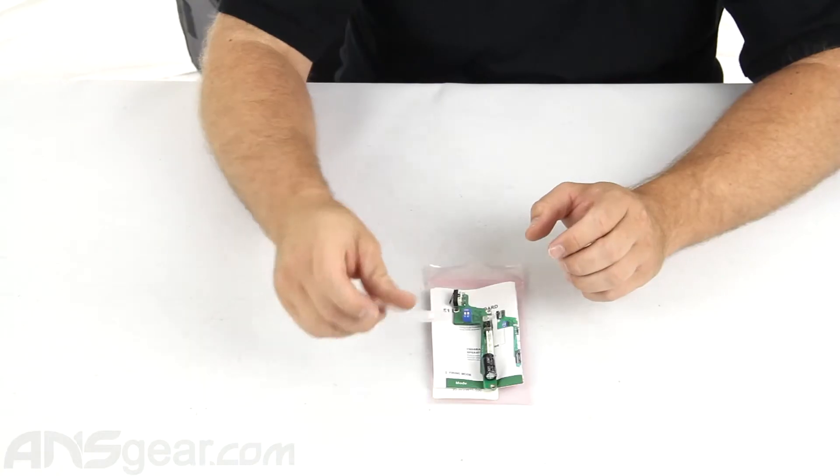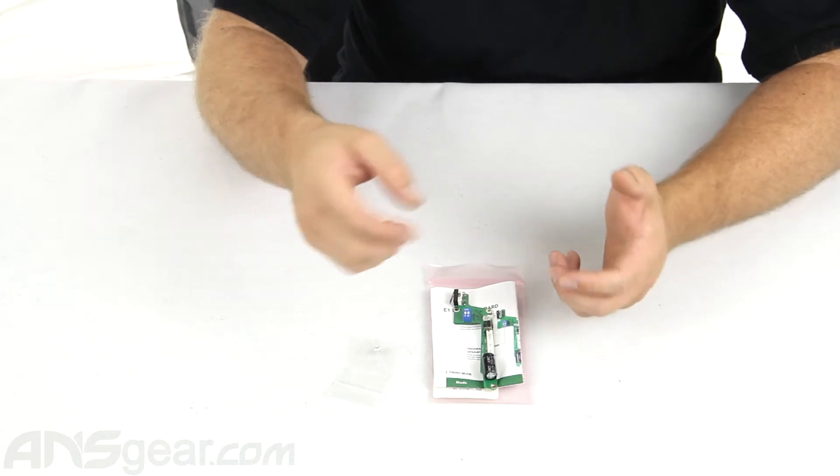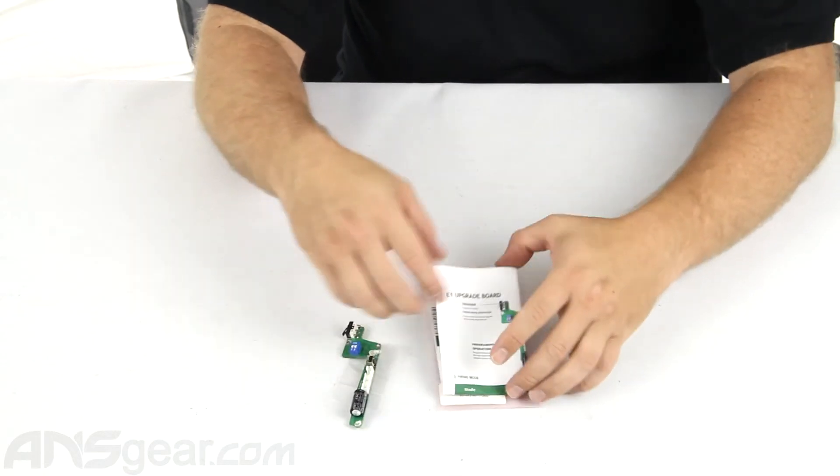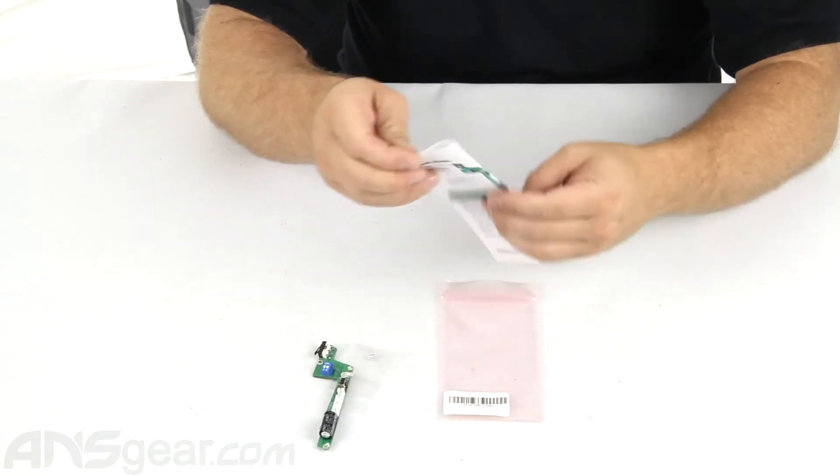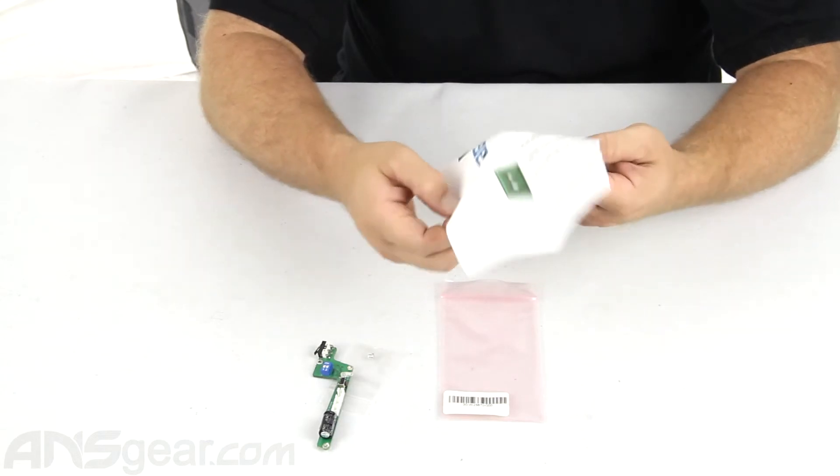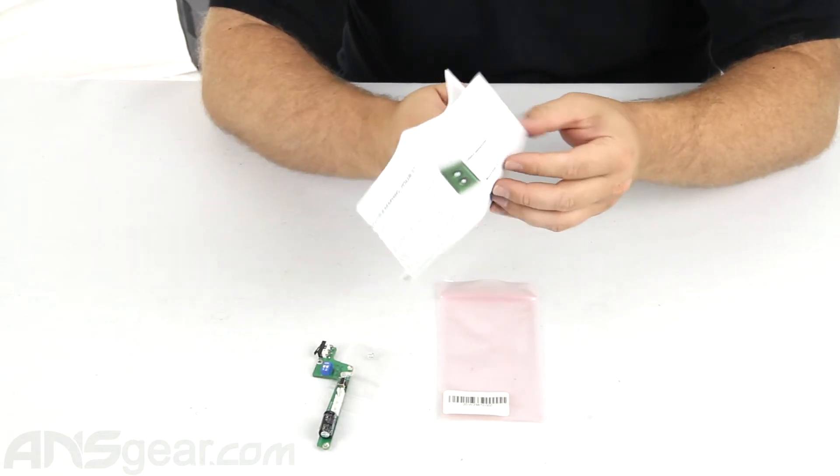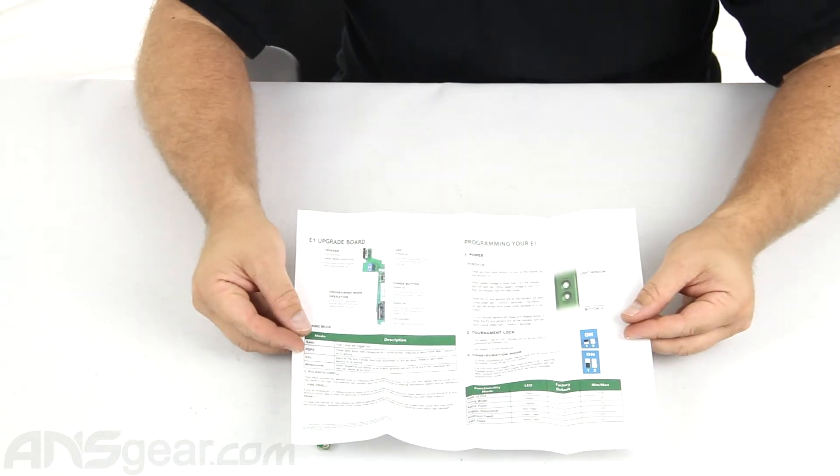They give you an extra button right there so that you can replace the button on the back if you happen to lose it or it falls out. It's gonna come with a nice manual. It's gonna basically give you all the information you need on how to do your programming, how to change everything around.